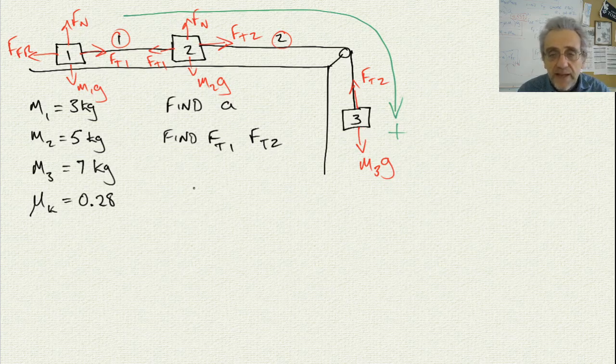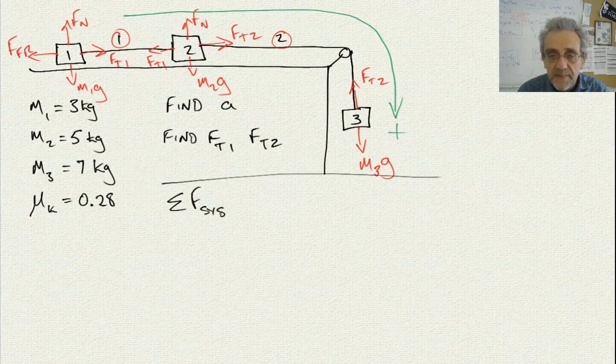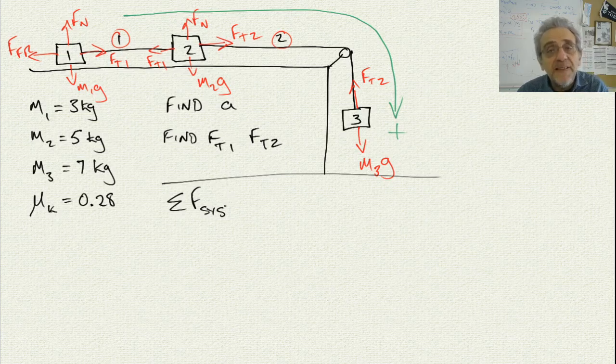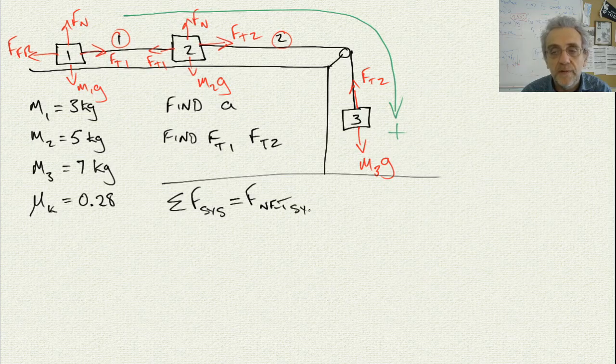Now I'm going to go ahead and write down summation of the forces for the system. Because I always do system analysis first to calculate the acceleration. There's no other way to calculate the acceleration. And also, I can't find the individual tensions without the acceleration. So this is step number one, is the system analysis. And here is the equation for it. There it is. Summation of the forces is equal to Fnet, but for the system.